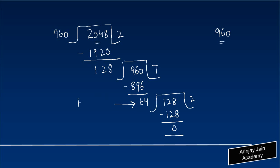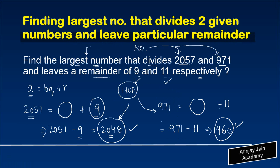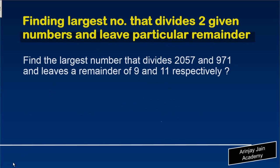The highest common factor is 64. In other words, when 64 divides 2057 and 971, it leaves a remainder of 9 and 11 respectively. Let's verify this.